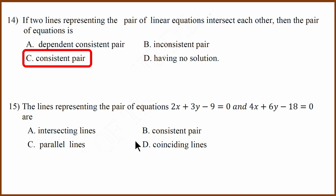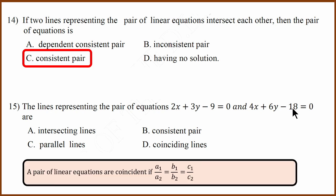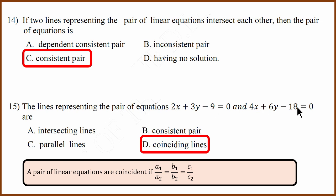Fifteenth question: the lines representing the pair of equations 2x plus 3y minus 9 and 4x plus 6y minus 18 — what are these? These are coincident lines, because A1 by A2 is half, B1 by B2 is half, and C1 by C2 is also half. All three ratios are equal, so they are coincident lines.